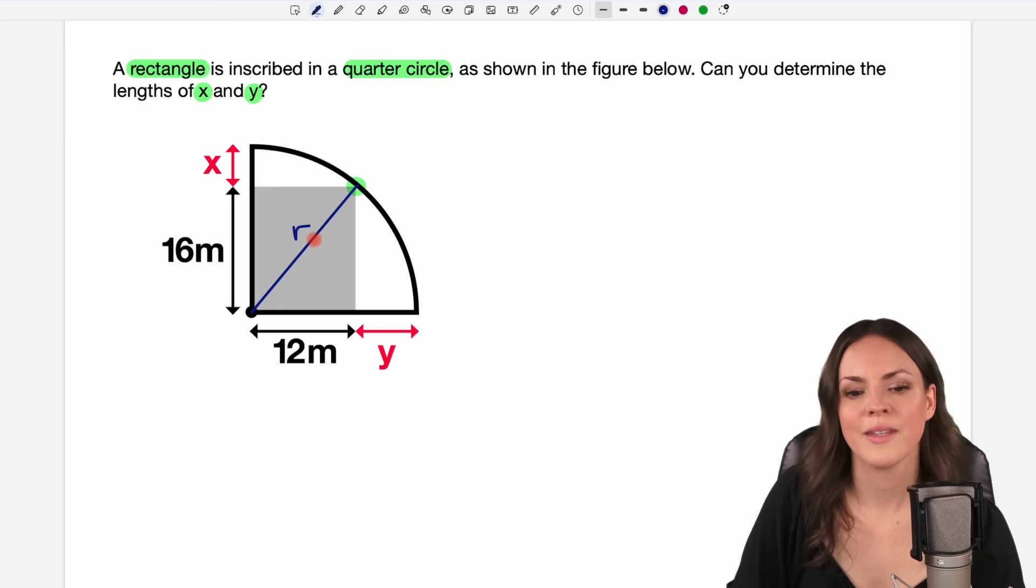Why? Because now we have created a triangle here. Can you see this? And this is not any triangle. It is a right triangle because this gray thing here is a rectangle.